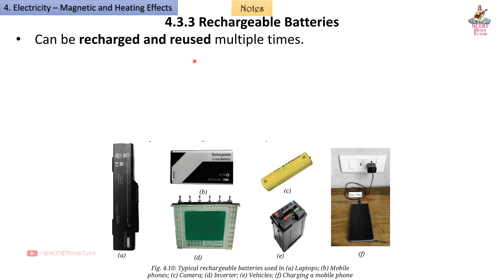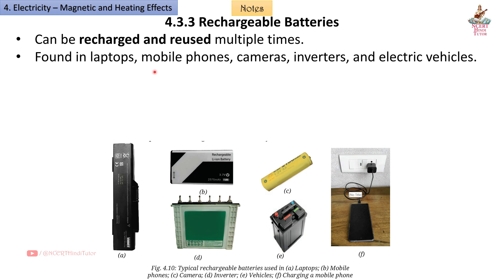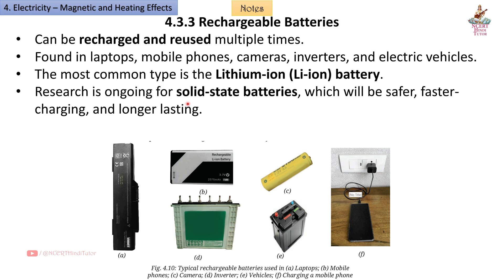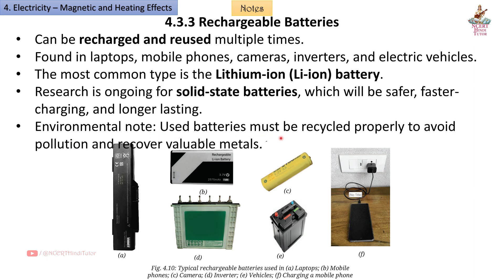4.3.3 Rechargeable Batteries: Can be recharged and reused multiple times. Found in laptops, mobile phones, cameras, inverters, and electric vehicles. The most common type is the lithium-ion (Li-ion) battery. Research is ongoing for solid-state batteries, which will be safer, faster-charging, and longer-lasting. Environmental note: used batteries must be recycled properly to avoid pollution and recover valuable metals.